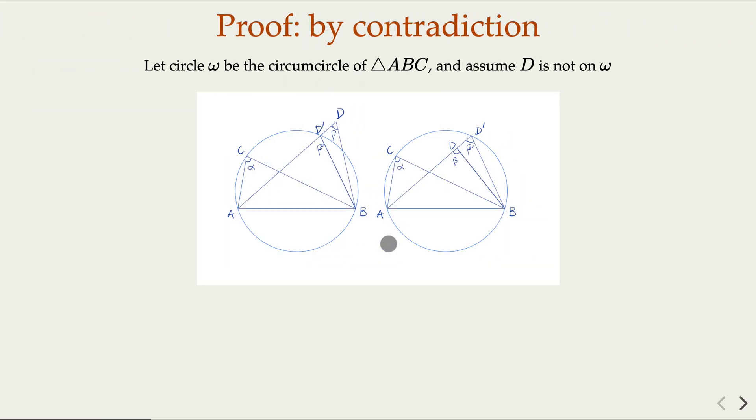This proof can be proved by contradiction. The high-level idea is to assume they're not on the same circle and find the circumcircle of ABC. If D is either outside or inside, in both cases you'll have a contradiction. Anyway, let's take that as a fact.